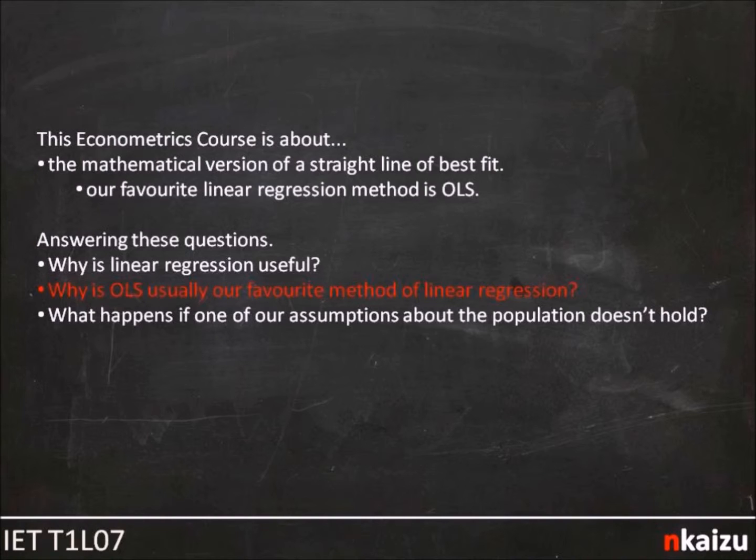The second is, why is OLS usually our favorite method of linear regression? The layman's answer to that is, OLS is on average correct, and even if it's incorrect, it's not incorrect by that much. The slightly more technical answer is that a couple blokes called Gauss and Markov showed with the Gauss-Markov theorem that not only is OLS unbiased, but compared to all other unbiased estimators, OLS has the smallest variance.